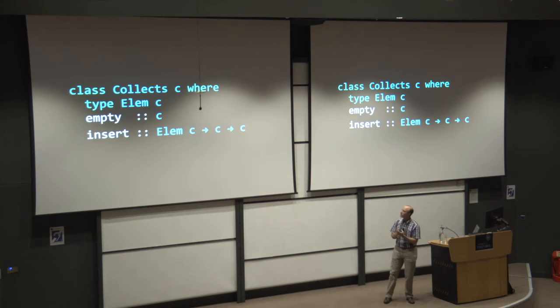So here's our first example of a type family. So Elm here is the type family. This Collects class describes collections. So C is a collection, and every collection has some element type. And so we're going to say that Elm C, if C is a collection, Elm C is going to be its element type. And we can make empty ones, and we can insert items into these collections.